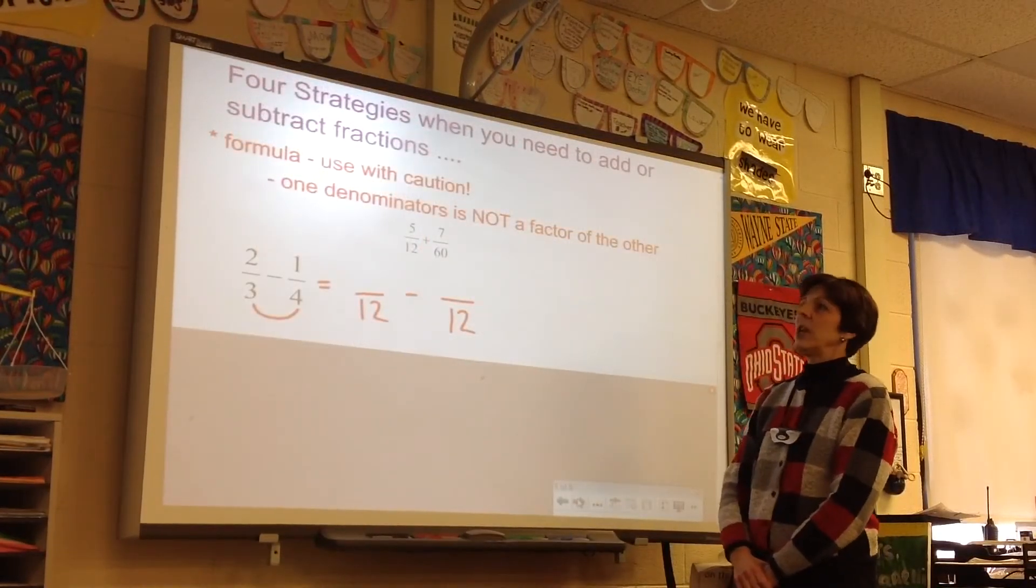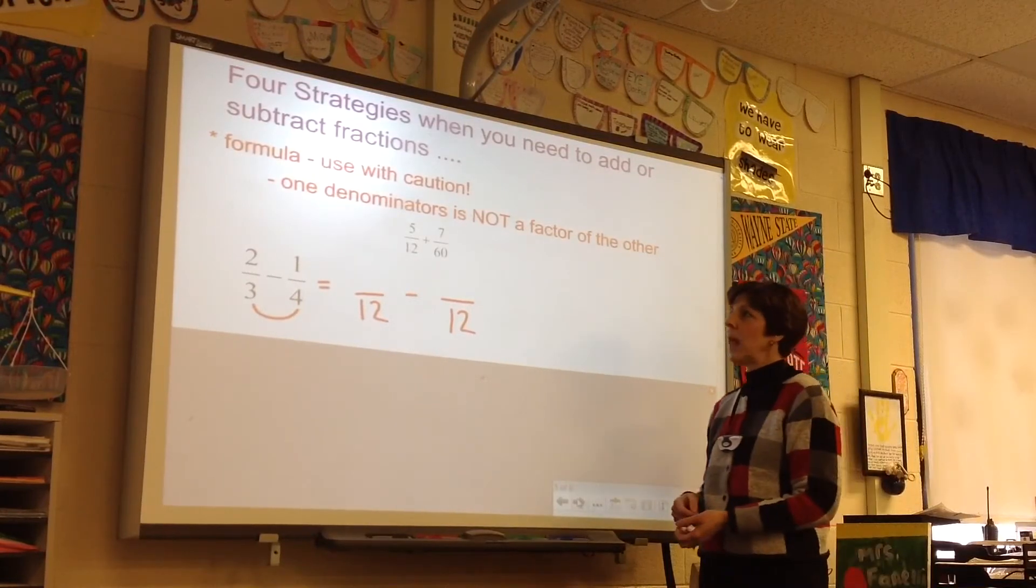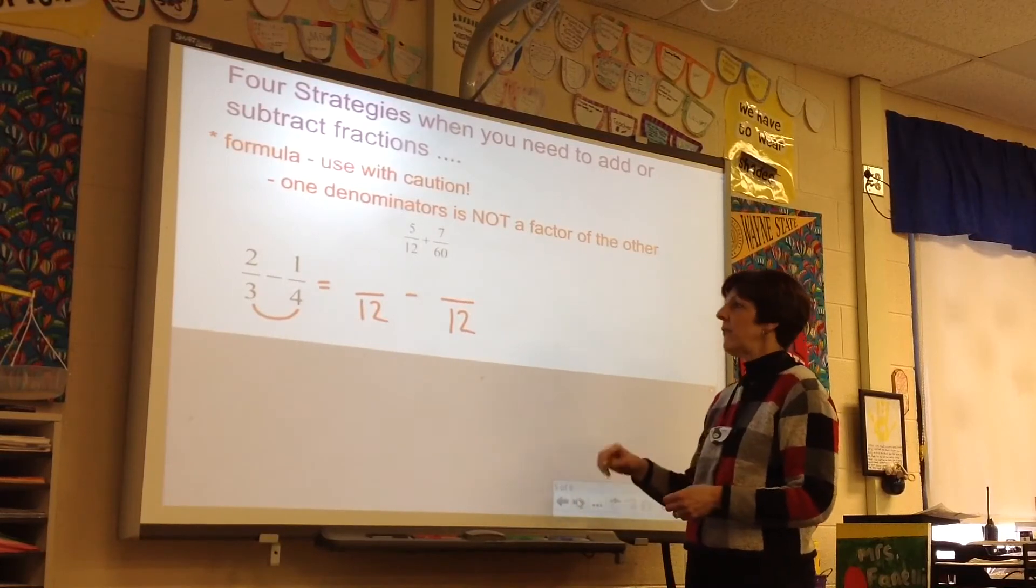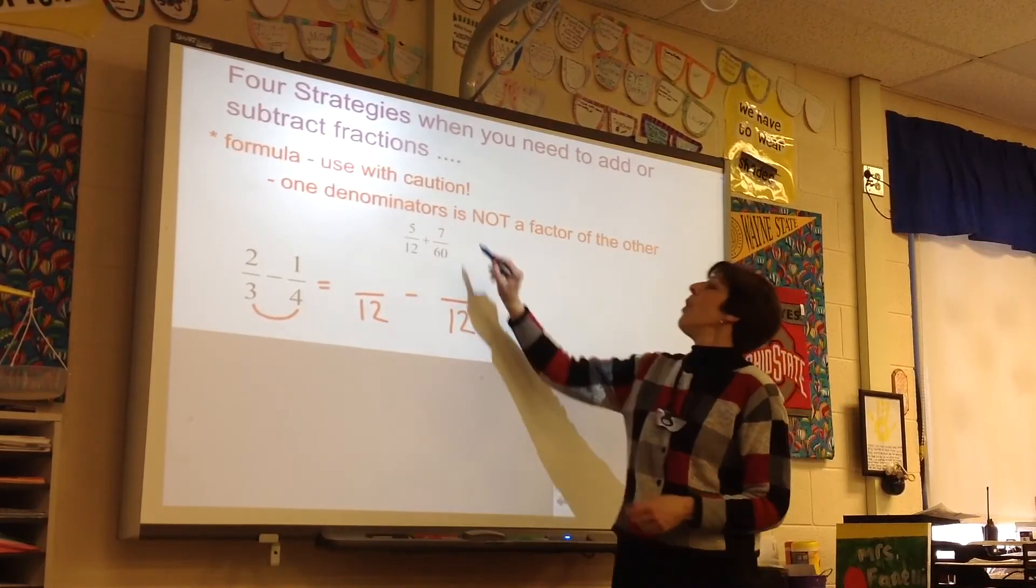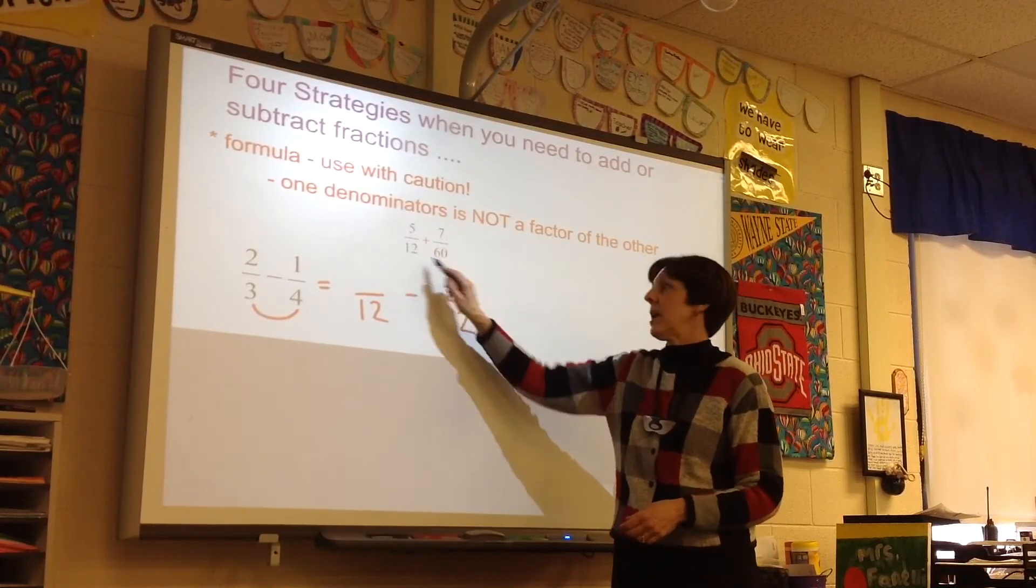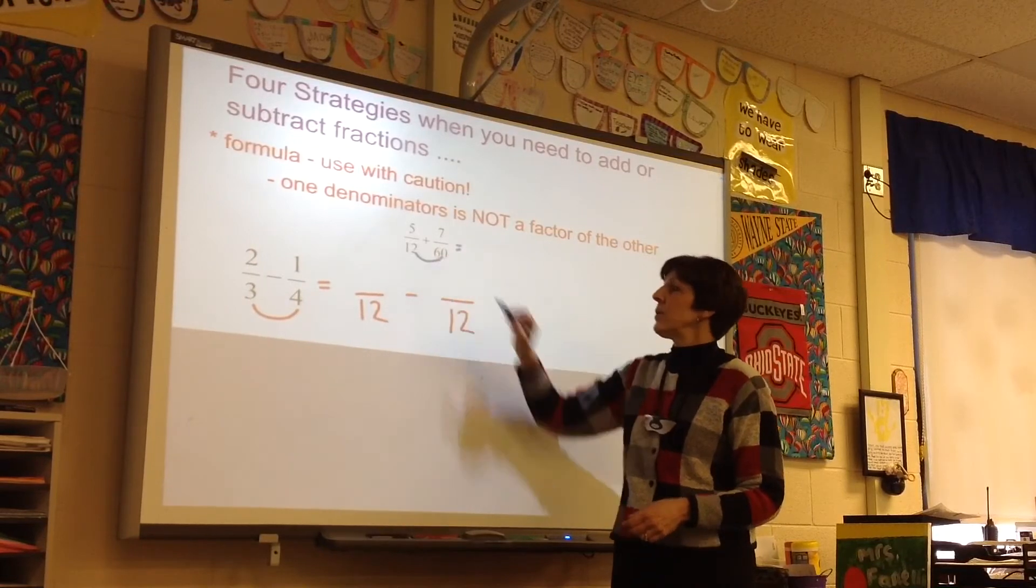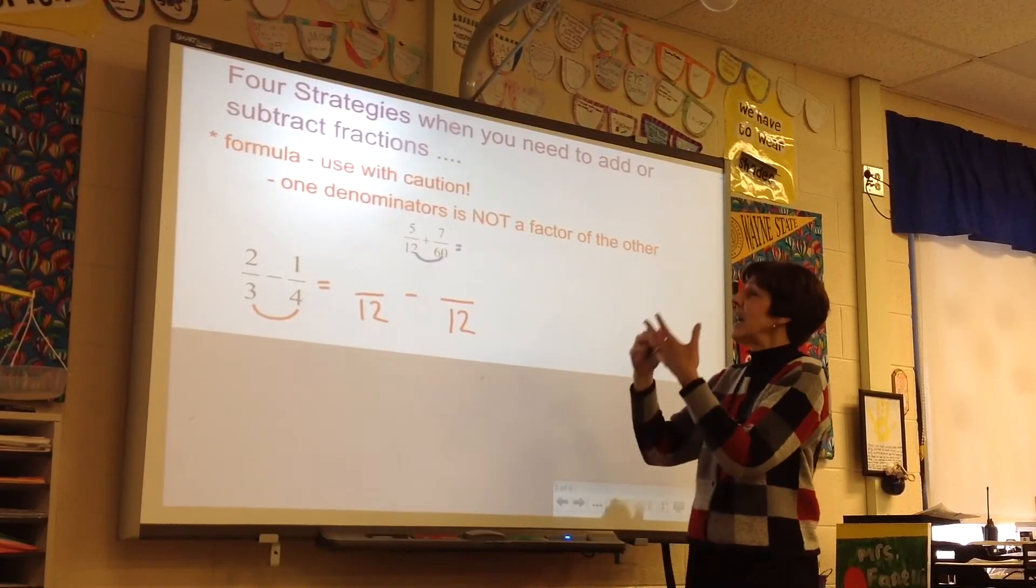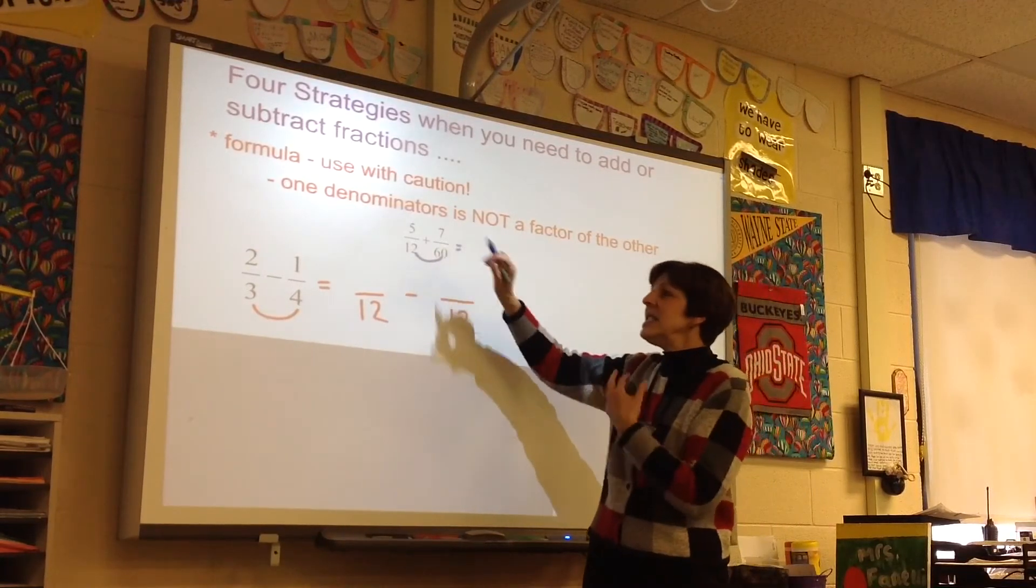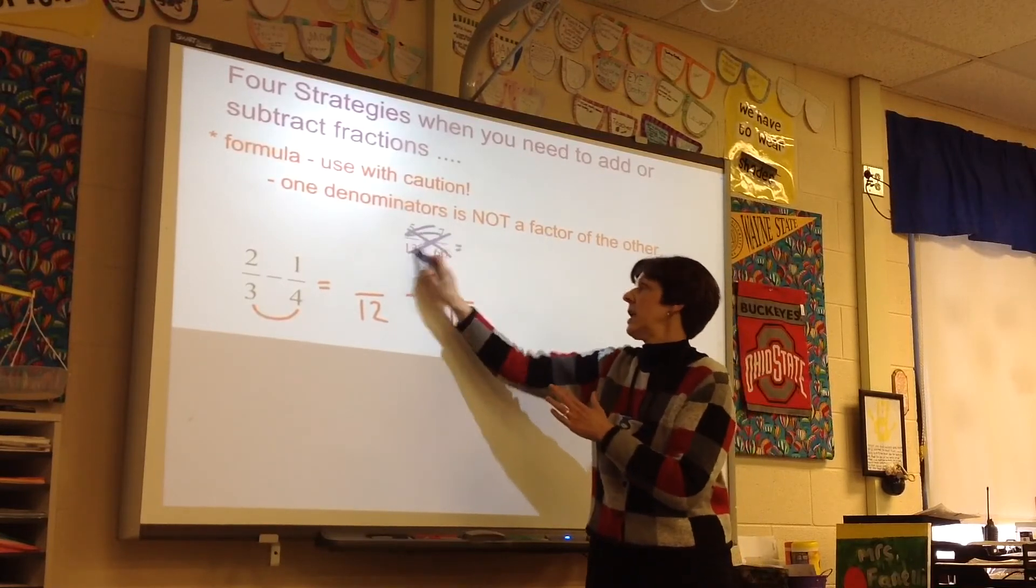Our final strategy is the formula. We developed this formula by using double number lines. This is used when one denominator is not a factor of the other. So for 5 twelfths plus 7 sixtieths, you would not want to use this strategy. First of all, because when you multiply the denominators, you're going to get a very large number. So we don't want children doing that. That is not a good equation to use this strategy.